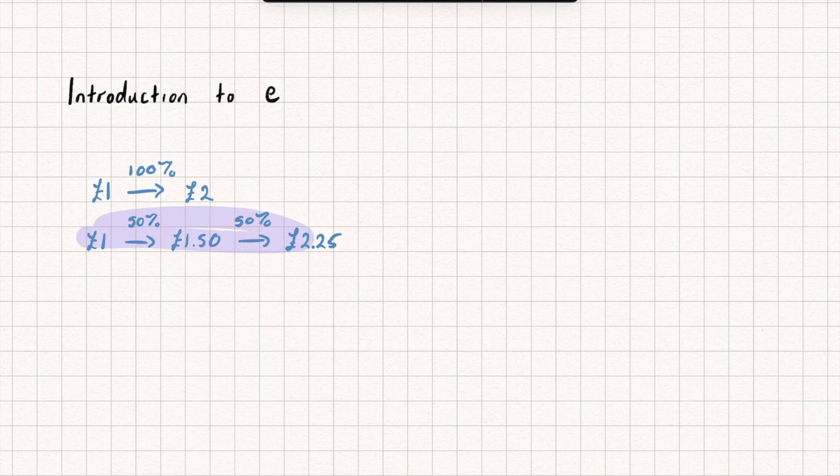And so looking at this example here I could say that I've got my one pound that I'm starting with and I'm multiplying that by one plus the interest rate which in this case was 50% which I could write as a half to the power of how often I'm getting that money which was twice.